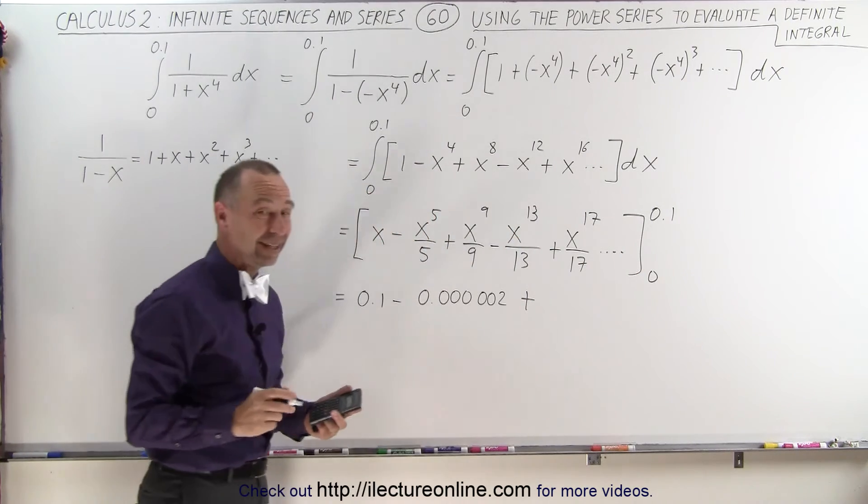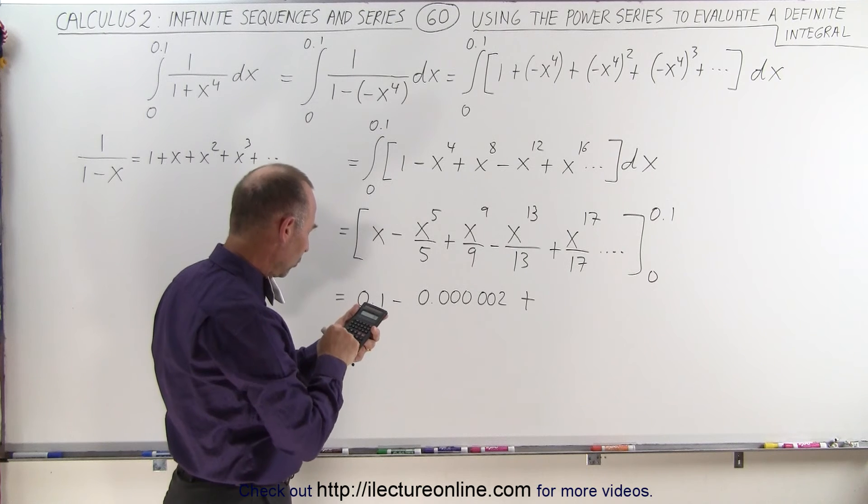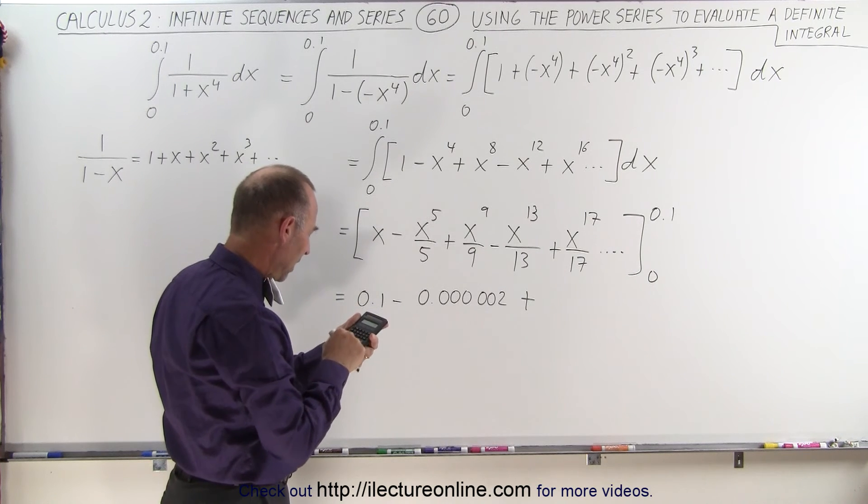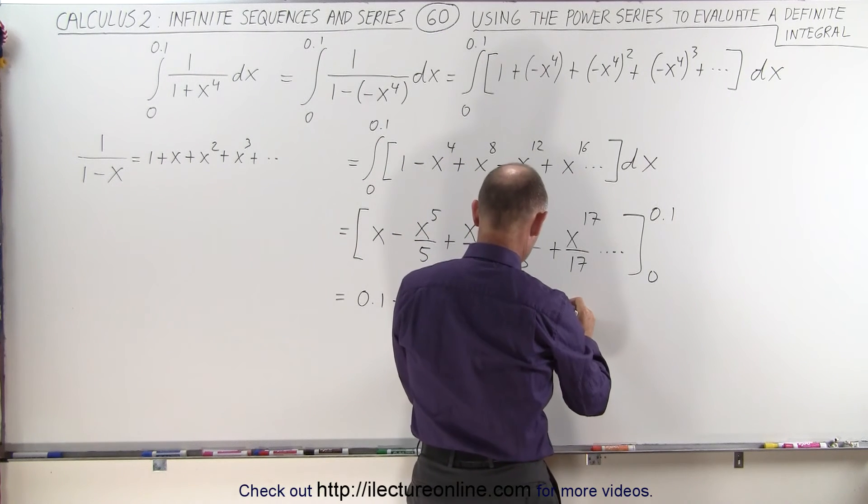Now we plug in the next one, and you can see that number is going to get very small very quick. So we get 0.1 raised to the ninth power, divided by 9 equals, so this becomes plus, and I'll write as a scientific notation number.